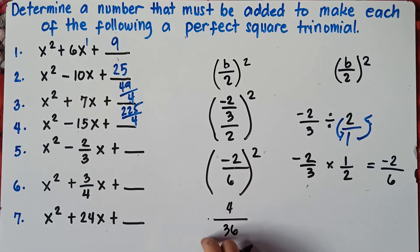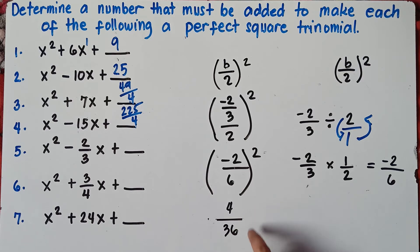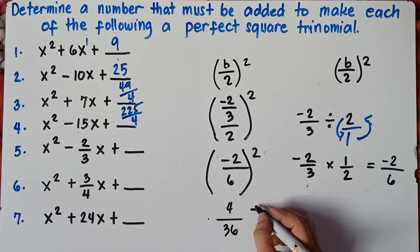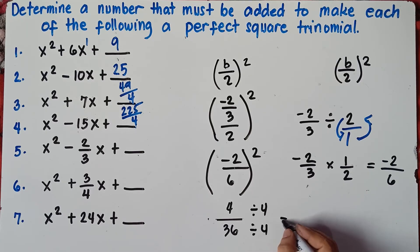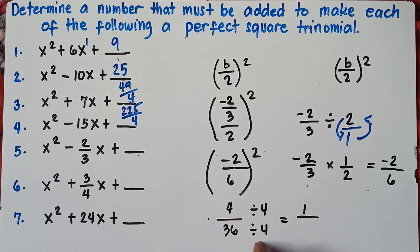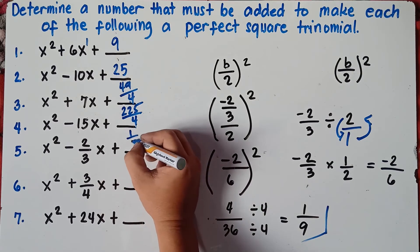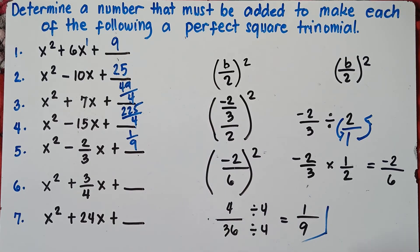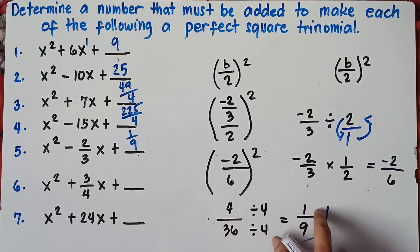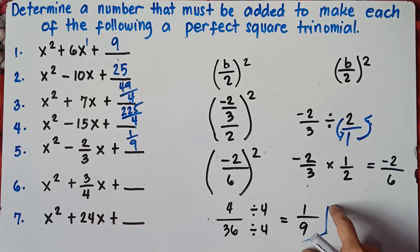Now check: can we reduce 4 over 36? In fractions, it is mandatory to always reduce to the lowest term if possible. We find the GCF of 4 and 36, which is 4. 4 divided by 4 is 1. 36 divided by 4 is 9. So our final answer is 1 over 9.